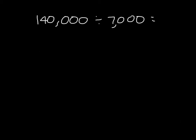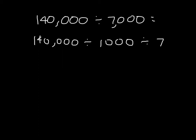Here I have another problem: 140,000 divided by 7,000. Again we'll keep our dividend the same, except this time we're talking about thousands. So we'll divide by 1,000 first, and then how many thousands are within 7,000 — there are 7 of them, so we'd still have to divide by 7. When we take 140,000 divided by 1,000, there are 140 of them. So we'd have 140 divided by 7 — that's 14 tens divided by 7; 14 divided by 7 is 2, so that's 2 tens, or 20. So 140,000 divided by 7,000 is 20.